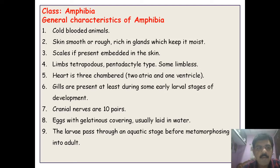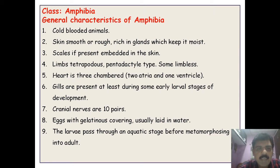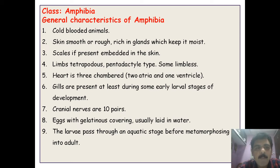Hello everyone, today we will discuss Class Amphibia — its characteristics, representative examples, and classification. These amphibians are cold-blooded animals, meaning their body temperature fluctuates with the environmental temperature.